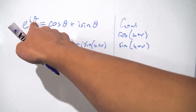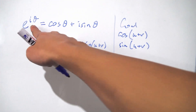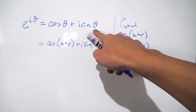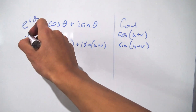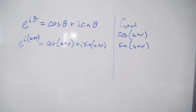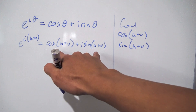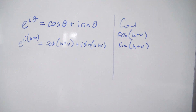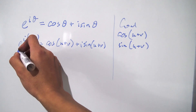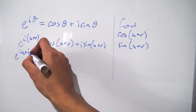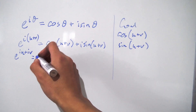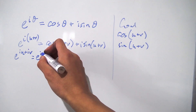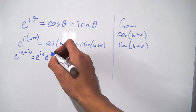Notice that in Euler's formula the theta in the argument of e appears in the argument of the cosine and the sine. So if the argument is u plus v, we must have e to the i times (u plus v). We can expand the bracket in the exponent to be i times u plus i times v. And using the property of exponentials that addition in the exponent splits into multiplication, we get e to the iu times e to the iv.